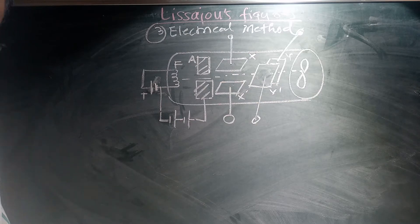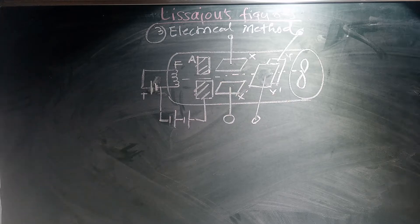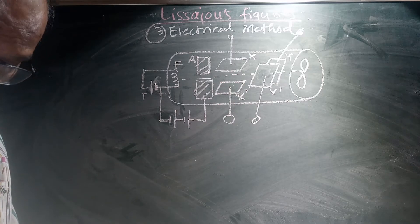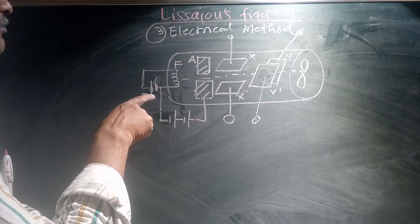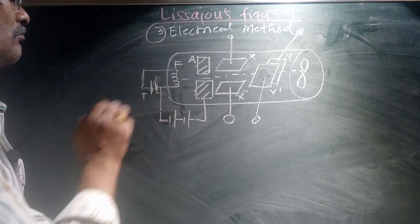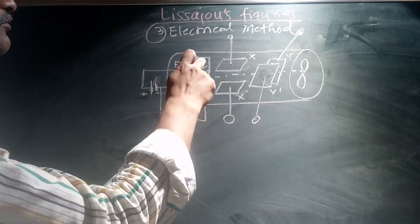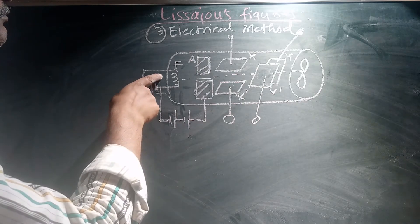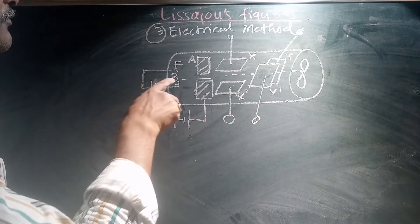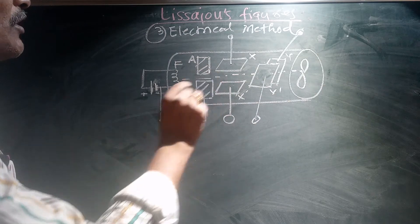So here this is actually the cathode ray oscilloscope, which is used to study the composition of two perpendicular systems. We have one potential and this is another potential which is applied to the anode and this is the filament. When this electrical field is applied to the filament, then cathode rays are ejected.